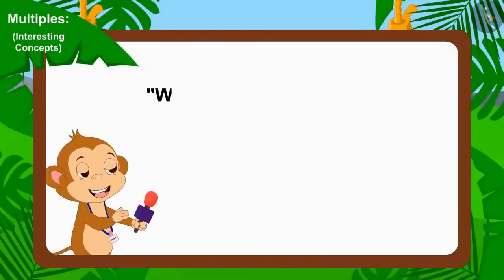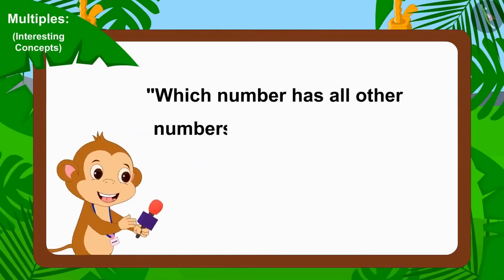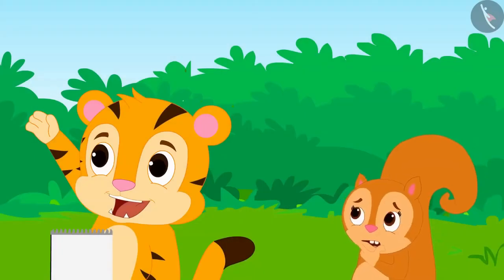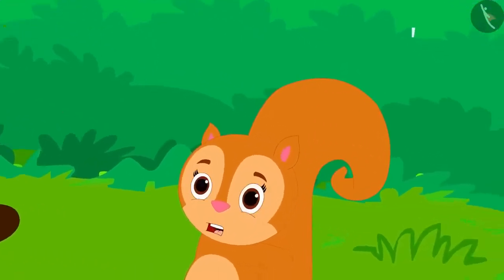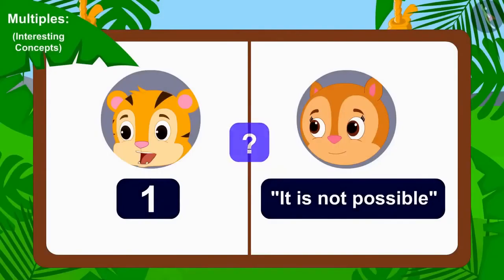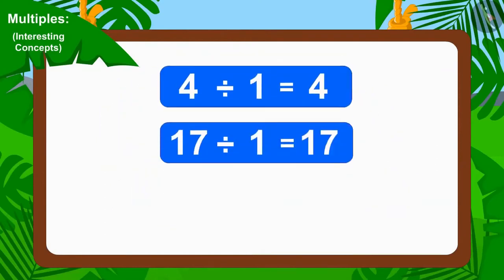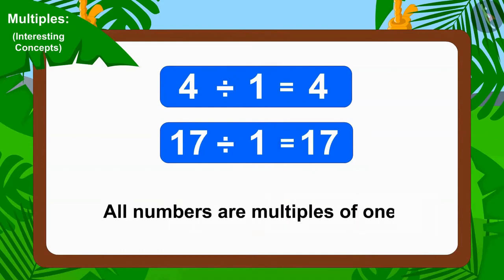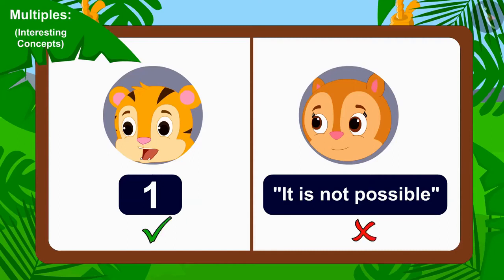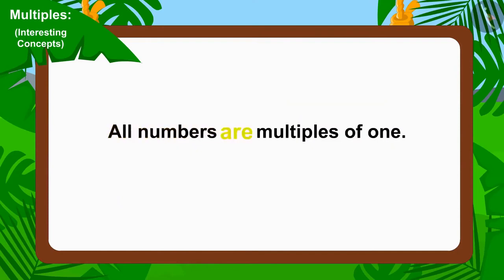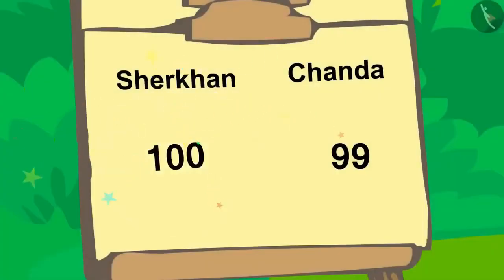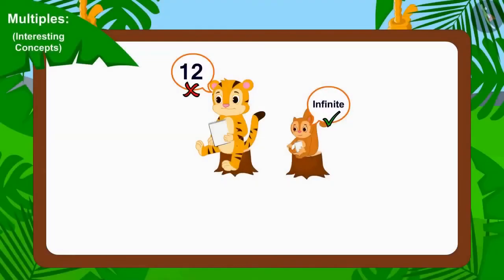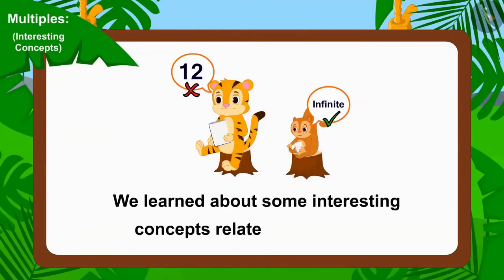The next question is: Which number has all other numbers as its multiples? Sheer Khan immediately replied, One. And Chanda replied, It is not possible, there is no such number. We can divide any number by 1. Therefore, all numbers are multiples of 1. Shere Khan's answer is absolutely correct - all numbers are multiples of 1. With this, Shere Khan won the competition. In this video, we learned about some interesting concepts related to multiples.